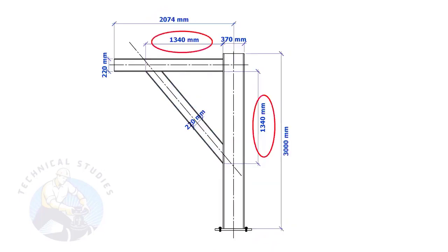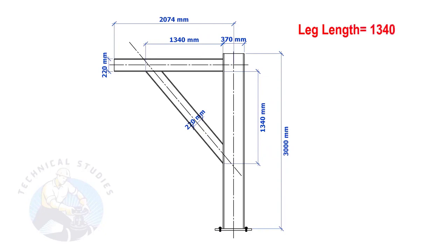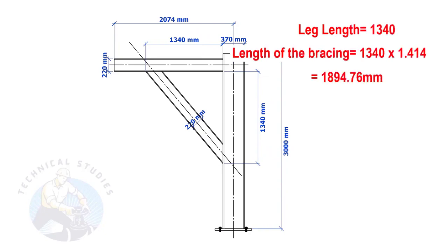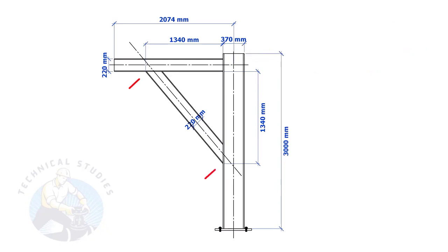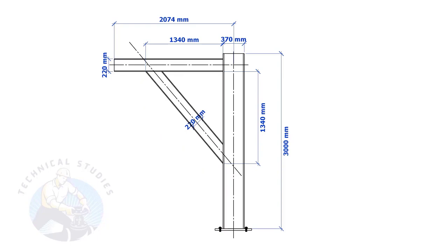Most of us know how to calculate the length and cutback if the leg lengths are equal. If you don't know, I will show you a simple calculation: multiply one leg length by 1.414. Remember, this method is applicable only if the leg lengths are equal. If both leg lengths are equal, the included angles will also be equal and 45 degrees.